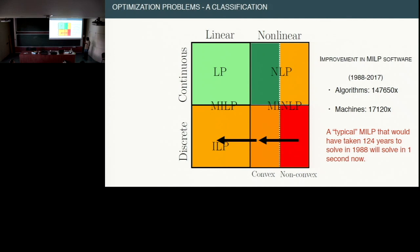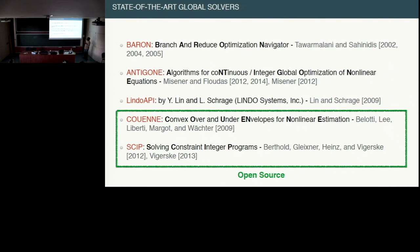Here are some of the state-of-the-art global solvers. I missed K-Nitro, which I learned about yesterday — the real state-of-the-art solvers include Baron, Antigon, Lindo API, and the two open-source solvers Couenne and SCIP. Minotaur is also global — Jeff's involved in that. We could add more solvers to the list but were constrained to those accessible through JuMP. Most of these solvers are based on the spatial branch and bound approach.